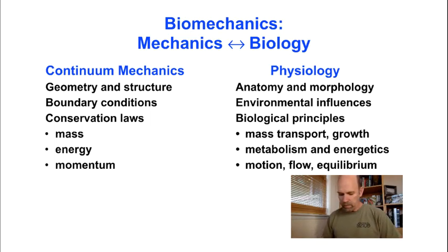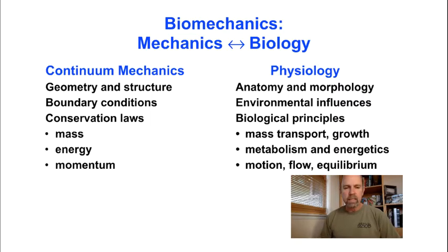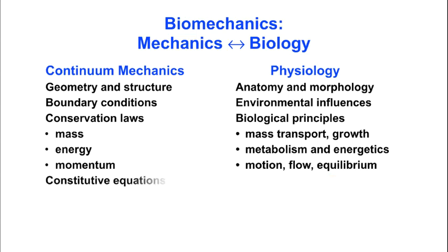For example, Poiseuille, for whom the famous law of laminar tube flow was named, was a physiologist who performed experiments on tube flow in 1838 and then subsequently did the analysis in 1840 and published the work in 1846. And finally, in continuum mechanics, we have the constitutive equations which describe the relationship between the structure of a material and its mechanical properties. And structure-function relations are a key objective and goal of physiologists to understand the relationship between the structure and the function of cells and tissues in organs.